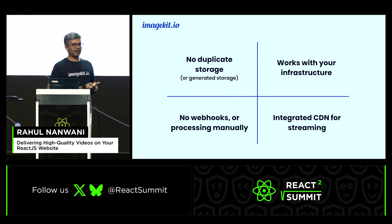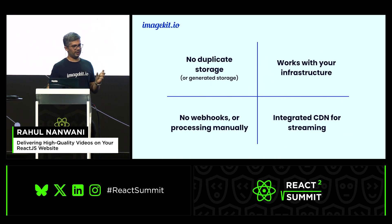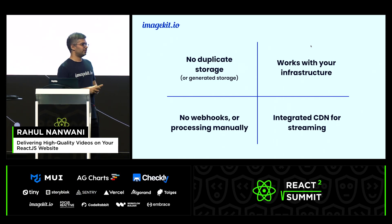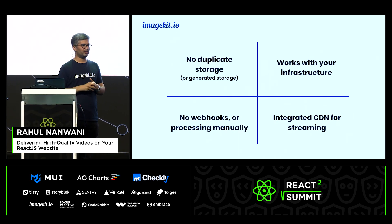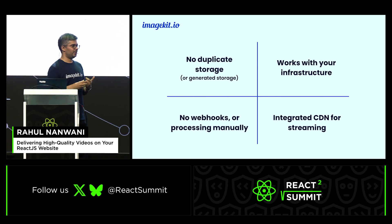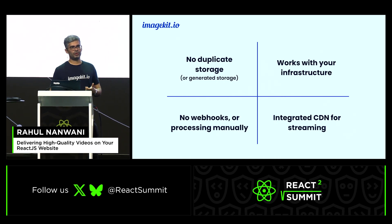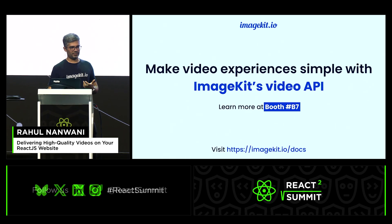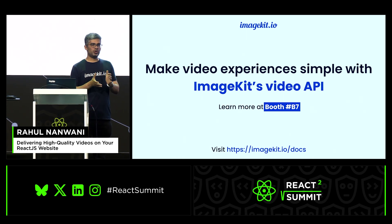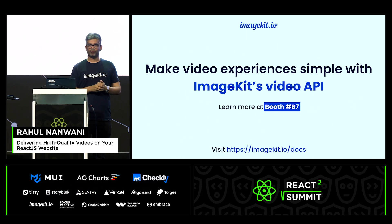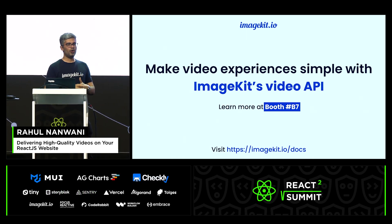The end result is you don't end up duplicating storage between your own cloud storage and a third-party platform — ImageKit works with your own cloud storage. It works even with your own CDN if desired. There is no manual processing: you don't have to manually set up a CDN, listen to webhooks, or wait for processing to complete. It's a simple URL-based API you can integrate directly into your React application, or any other framework you use. So if you're working on a video-intensive application and looking to optimize and stream videos, do give ImageKit a try. We're at a booth upstairs — happy to answer any questions about video streaming or media optimization in general. Thank you!